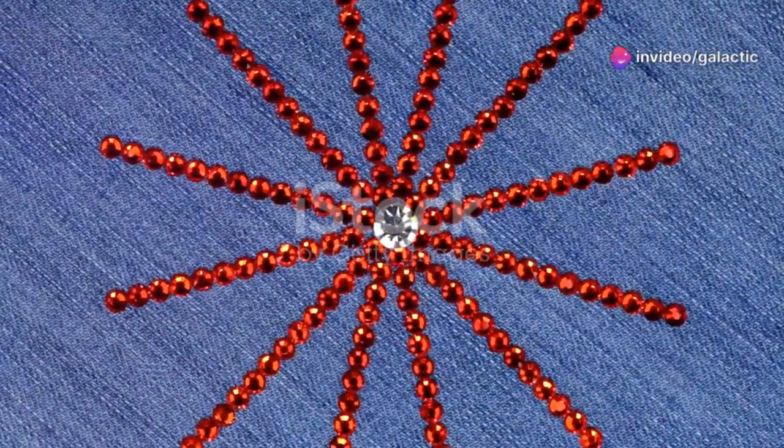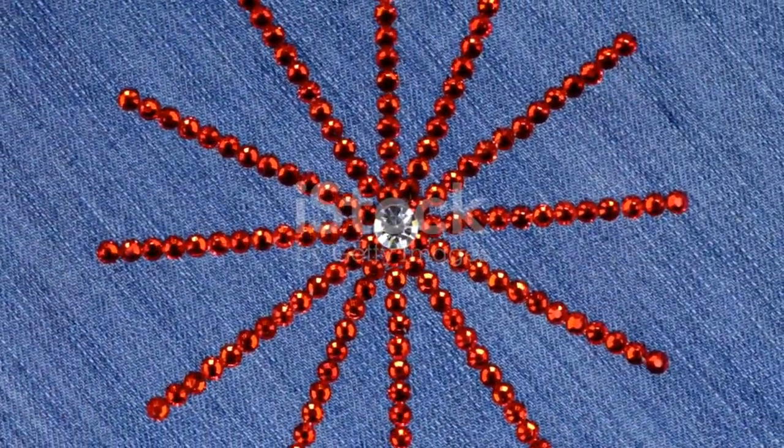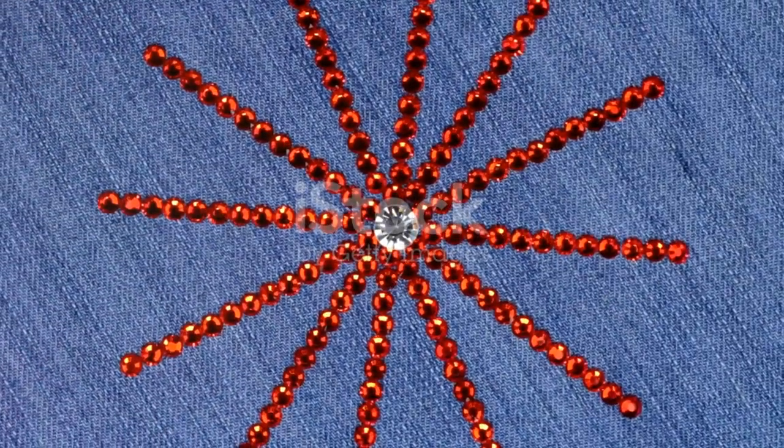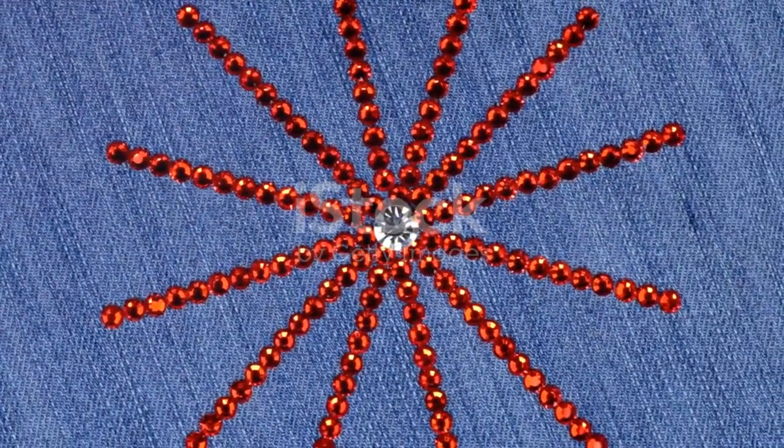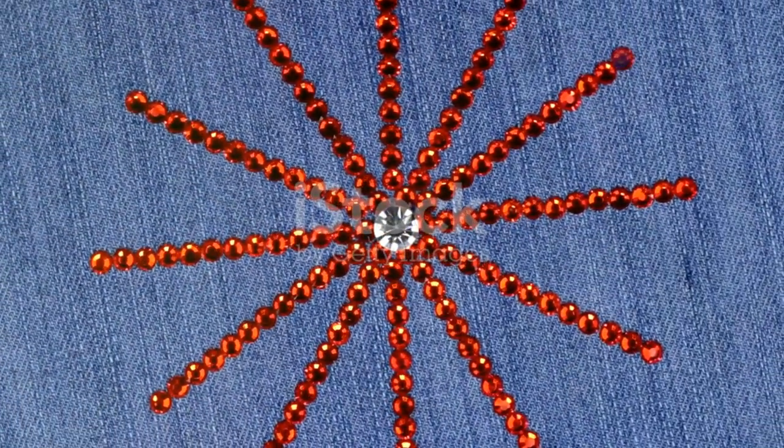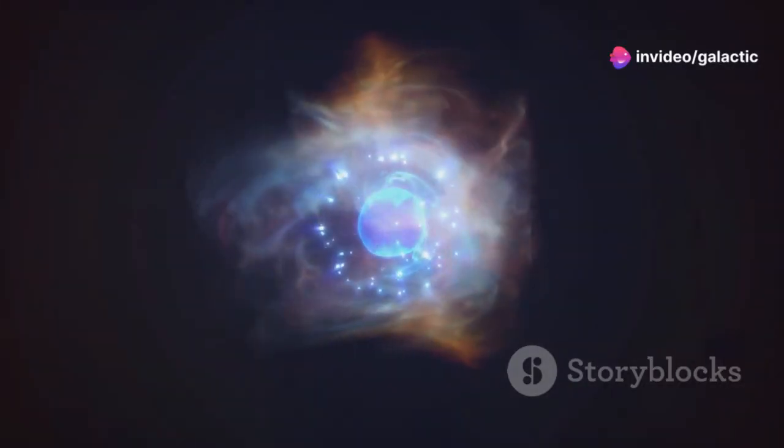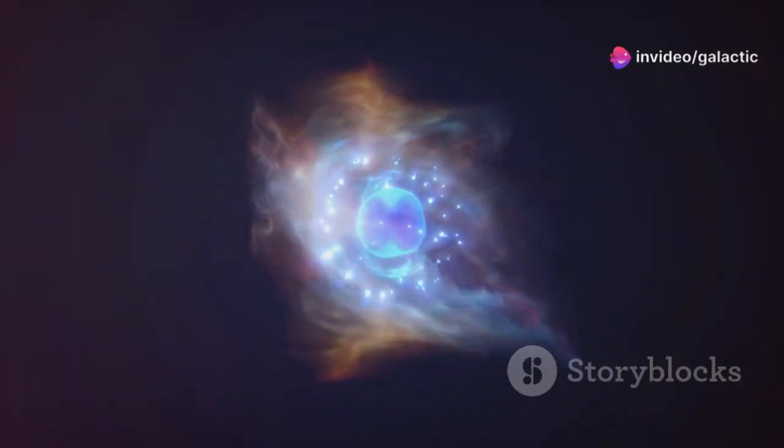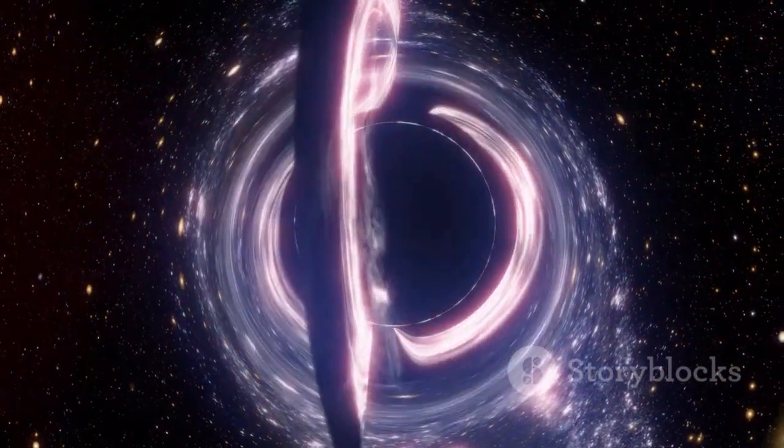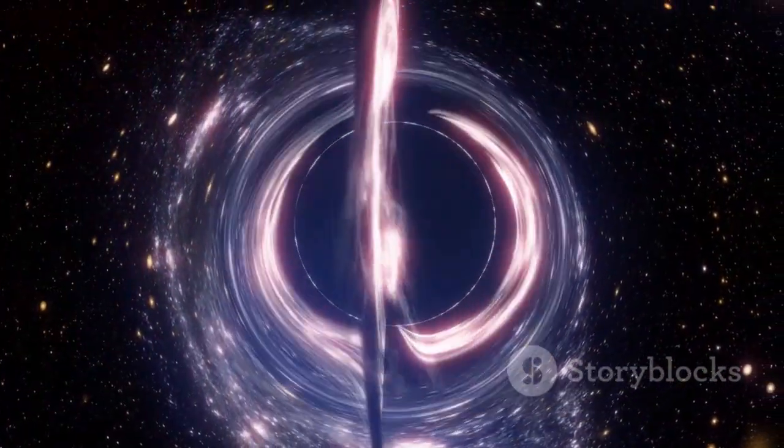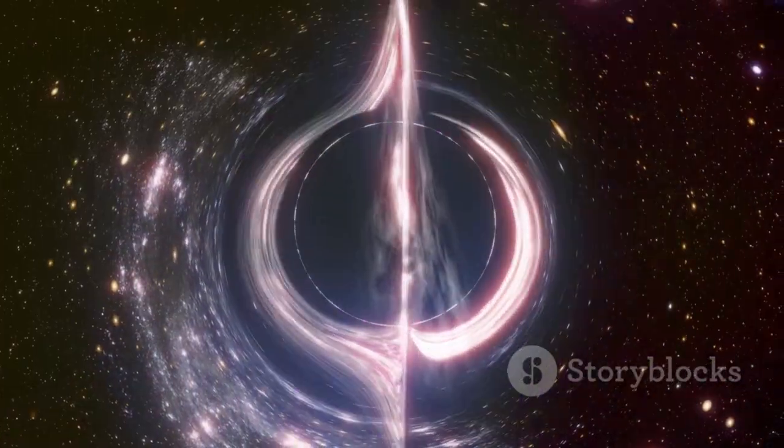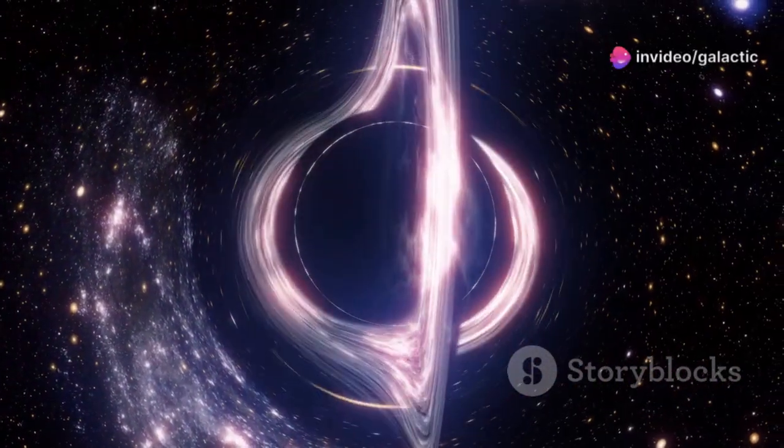Some pulsars are found in binary systems, where they orbit another star. These interactions can lead to fascinating phenomena, such as the transfer of material between stars and changes in the pulsar's rotation rate. In some cases, the pulsar can pull material from its companion star, forming an accretion disk. This process can increase the pulsar's rotation speed even further, making it spin at rates that challenge our understanding of physics.